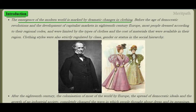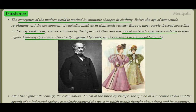Let's study about a new chapter called 'Clothing: A Social History.' The emergence of the modern world is marked by dramatic changes in clothing. Before the age of democratic revolution and development of capitalist markets in the 18th century in Europe, most people dressed according to their regional codes. They were limited by the types of clothes and the cost of materials available. Clothing styles were regulated by class, gender, or status in the social hierarchy.